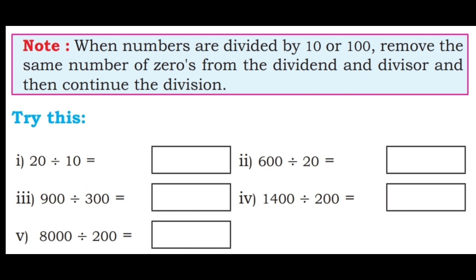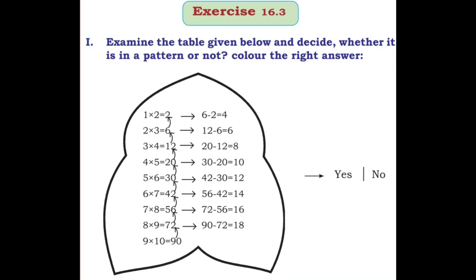Try this. 20 divided by 10: cancel the zero from both, so 2 divided by 1 is 2. 600 divided by 20: cancel one zero from each, leaving 60 divided by 2, which is 30. 900 divided by 300: cancel two zeros, leaving 9 divided by 3, which is 3. 1400 divided by 200: cancel two zeros, leaving 14 divided by 2, which is 7. 8000 divided by 200: cancel two zeros, 80 divided by 2 is 40.